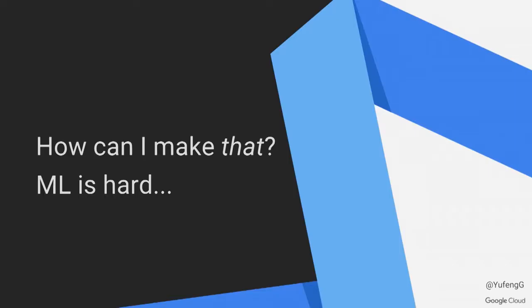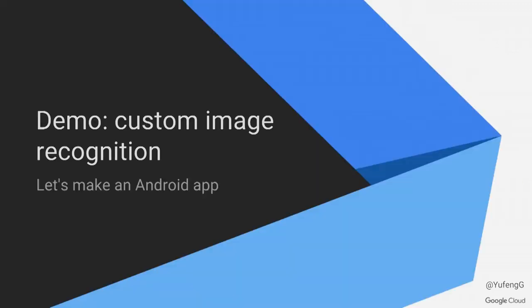So how can we make something like that? Machine learning is hard enough by itself, then put it on mobile — and mobile apps aren't easy either. Combining those can be a real challenge. So let me start by showing you a little demo of what I've put together, and then we'll talk through how we might build something like this. It's a simple demo, mainly just to demonstrate the core functionality.